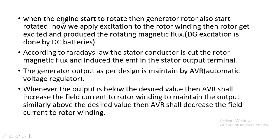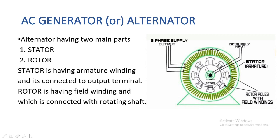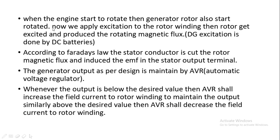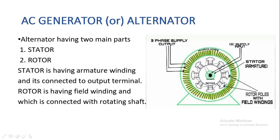When the engine starts to rotate, the generator rotor also starts rotating, since it is mounted on the same rotating shaft. Now we apply excitation to the rotor winding. Excitation means we are giving an external DC supply or DC current to this field winding — through an external battery or similar source — as input supply to the field winding.